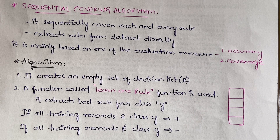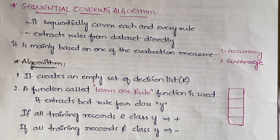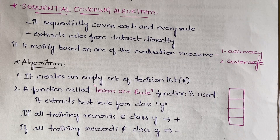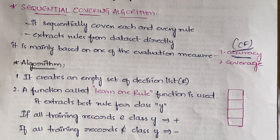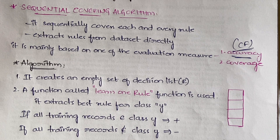It extracts the rules directly from the dataset. The universal dataset is given and from it the algorithm takes the data directly. It is mainly based on two evaluation measures — accuracy and coverage. Accuracy is the confidence factor: how accurately your rules fit the target function. Coverage means the rules should cover most of the training examples.